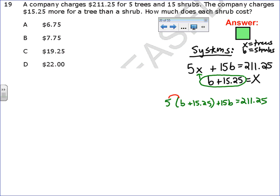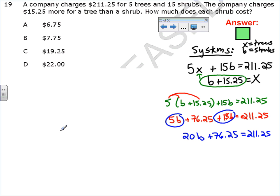Next, I need to distribute. That gives me 5B plus 76.25 plus 15B equals 211.25. I need to get my like terms together. So, that's going to make 20B plus 76.25 equals 211.25. Subtract 76.25, subtract 76.25.